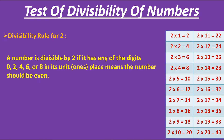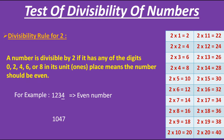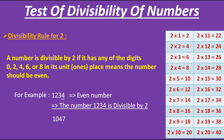Let's check by example. Here I am taking two numbers. To check whether the number 1234 is divisible by 2, we have to check if this number is even or odd. As this number has 4 in its unit place, it is an even number, and by the rule, this number is divisible by 2. Now the second number is 1047. It has 7 on its unit place, so this is an odd number, and therefore this number is not divisible by 2.